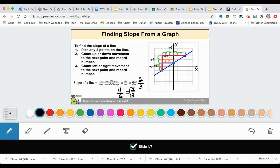And I noticed that both slopes are exactly the same. So it doesn't matter what two points you use, you're going to get the same slope. Thank you.